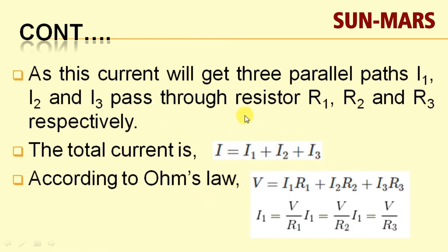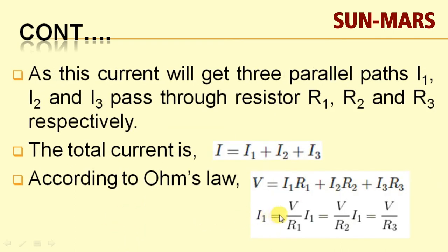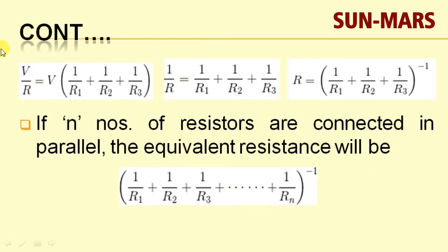Substituting I equals V/R, I1 equals V/R1, I2 equals V/R2, and I3 equals V/R3 into the equation I equals I1 plus I2 plus I3, we get: V/R equals V/R1 plus V/R2 plus V/R3. Dividing both sides by V, we finally get the formula: 1/R equals 1/R1 plus 1/R2 plus 1/R3.